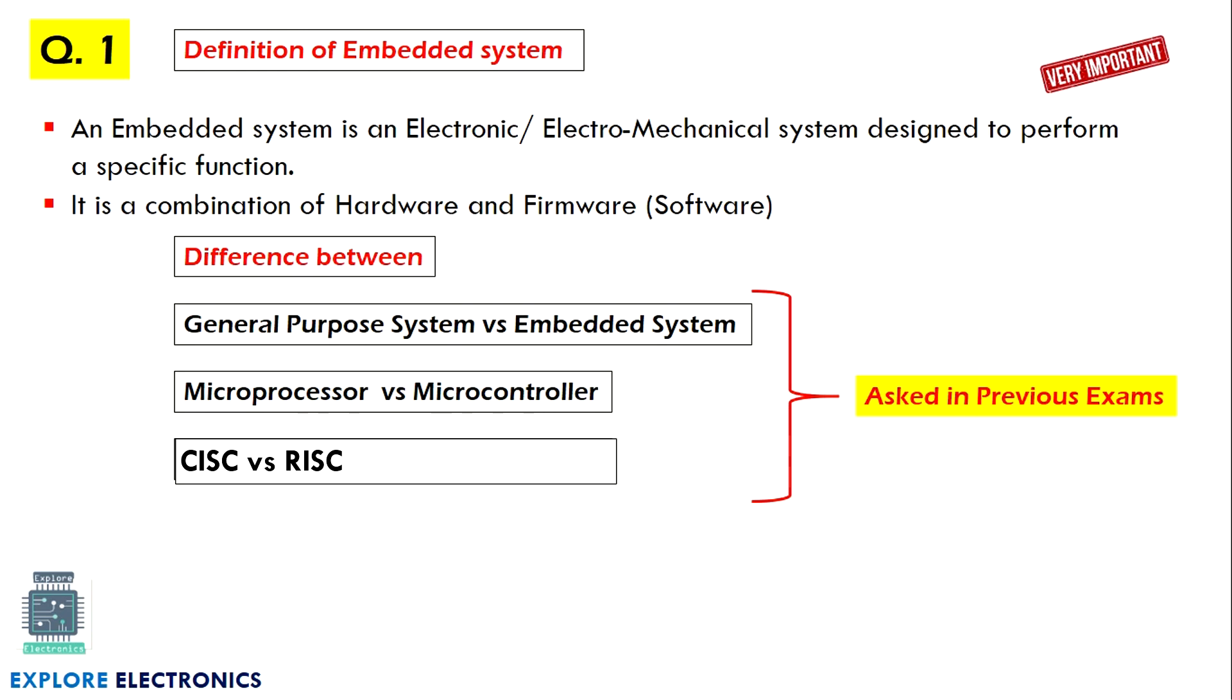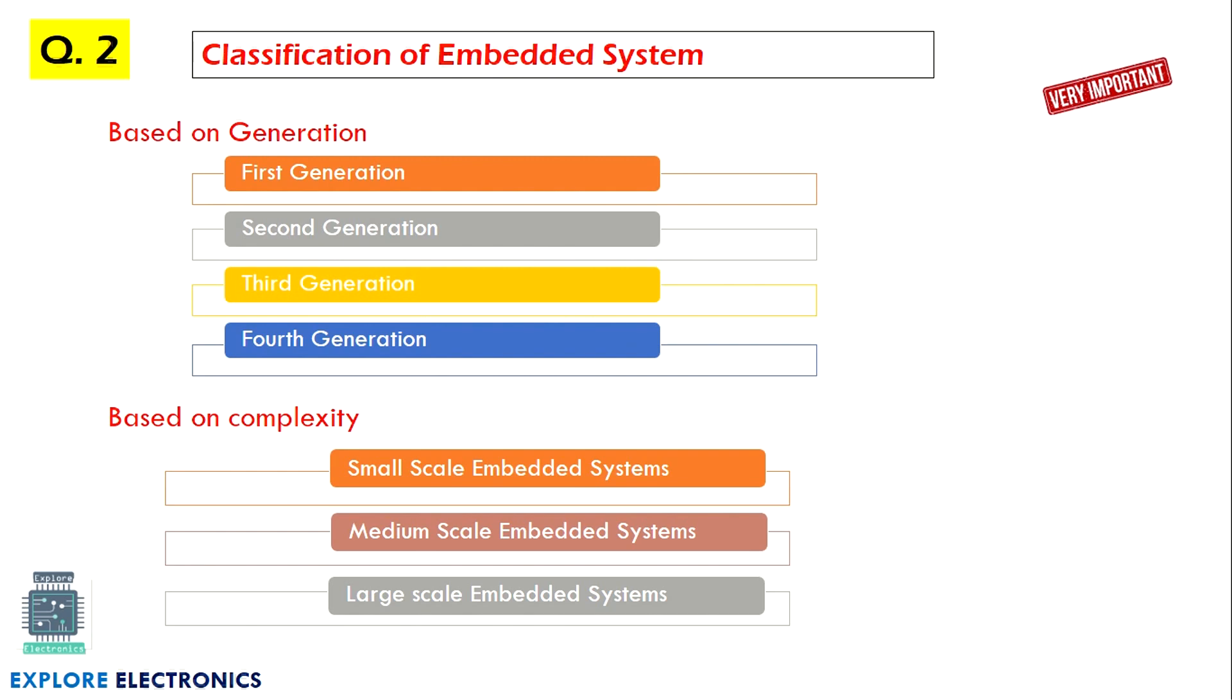Likewise they may ask the differences between microprocessor and microcontroller, and also Von Neumann and Harvard architecture they may ask the difference also. And then classification of embedded system is also an important concept here. And based on the generation, based on the complexity is enough to write the classification. If you want you can based on other classifications also you can write. But these two are very important for exam.